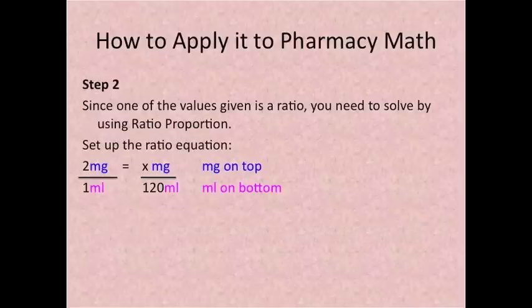Step 2. Since one of the values given is a ratio you need to solve it by using ratio proportion. Set up the ratio equation. You have 2 milligrams over 1 ml equals and because you put the milligrams on top you want to put the x milligrams on top also and then you have it over 120 ml.